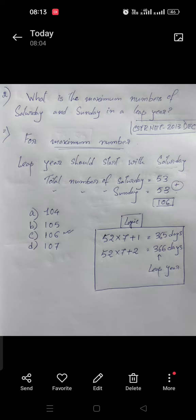In a leap year, if the leap year starts with a Saturday, after the Saturday there will be coming Sunday. So both the Saturday and Sunday can come 53 times in a leap year.